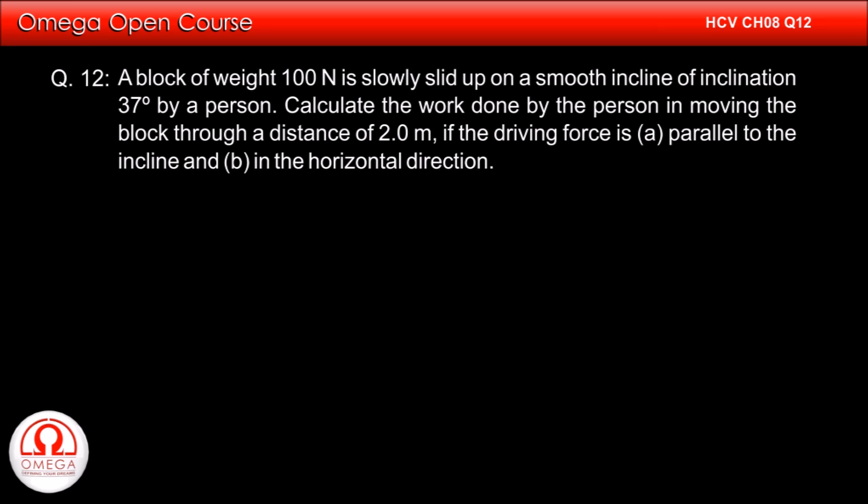A block of weight 100 Newton is slowly slid up a smooth incline of inclination 37 degrees by a person. Calculate the work done by the person in moving the block through a distance of 2 meters if the driving force is (a) parallel to the incline and (b) in the horizontal direction.